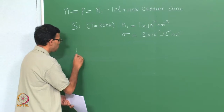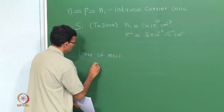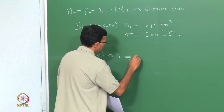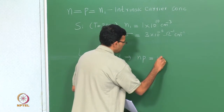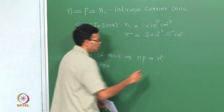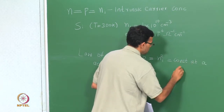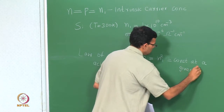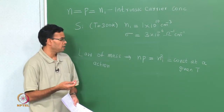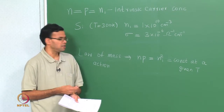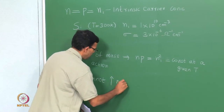We also saw the law of mass action, which states that the product of electron and hole concentration at equilibrium is equal to Ni squared. So this is constant at a given temperature. What this means is we can either increase electron concentration n or we can increase hole concentration p — we cannot increase n and p at the same time.